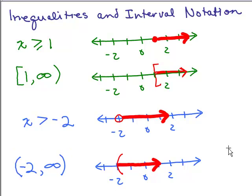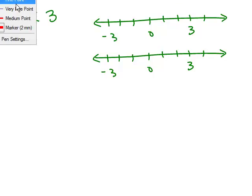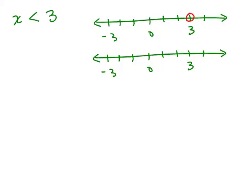Now let's do one where it's less than — it's going to be exactly the same, except the arrow will be going to the left. Let's say x is less than 3. Notice 3 is not a solution, so in standard notation I use a circle because it doesn't exactly touch 3. Then I want all the numbers to the left of 3, so I draw an arrow to the left. This is the usual notation most students first learn.